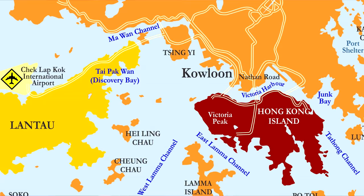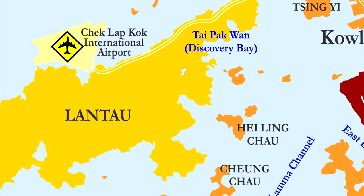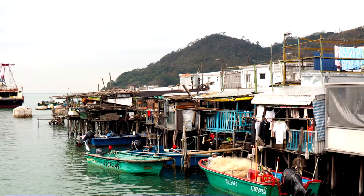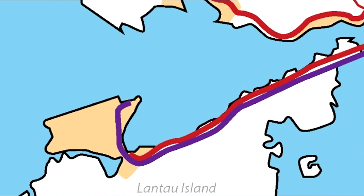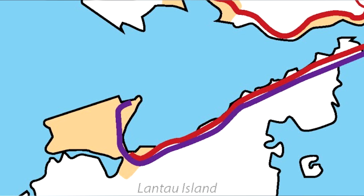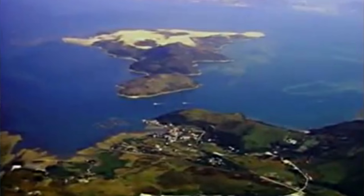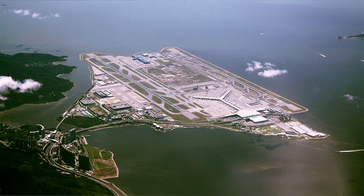The largest island in Hong Kong is Lantau Island. On this island you can find the famous Tiantan Buddha, also known as the Big Buddha, stilt homes on the waterside, and it's the location of Hong Kong Disneyland. Much of this island is forested. To the northwest of Lantau Island, there is another island — actually this used to be two islands, Chek Lap Kok and Lam Chow, but these two islands were joined together and expanded through land reclamation, and turned into the location of Hong Kong's current international airport, Chek Lap Kok Airport.